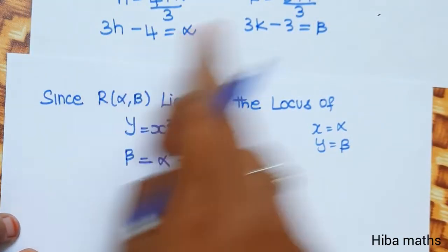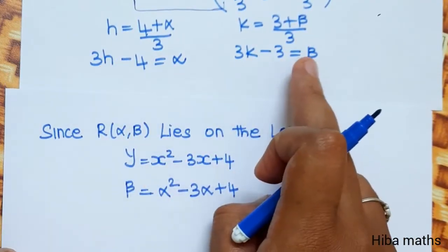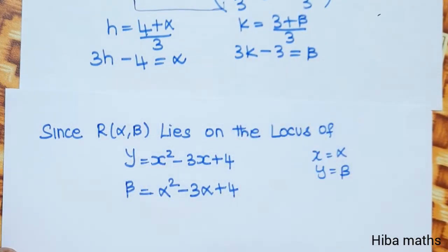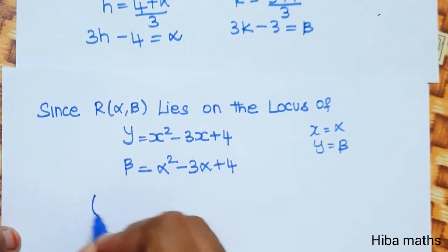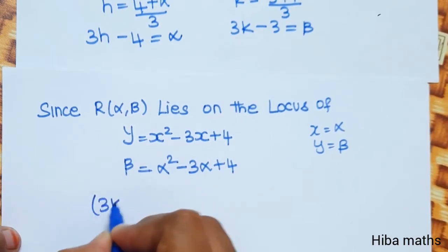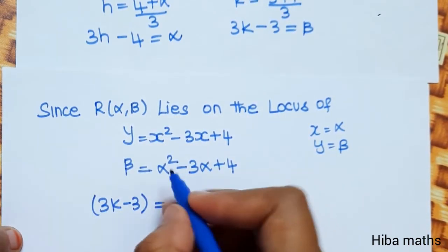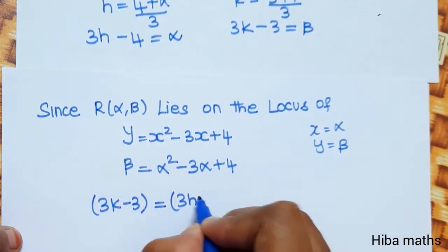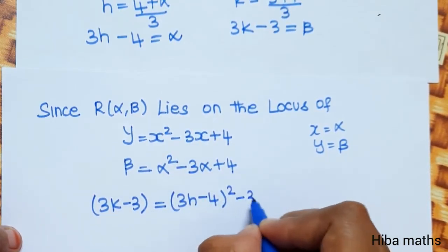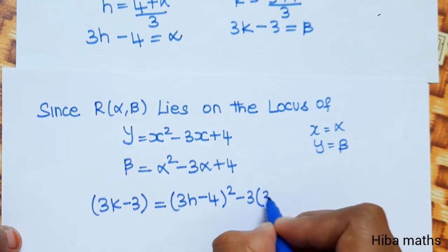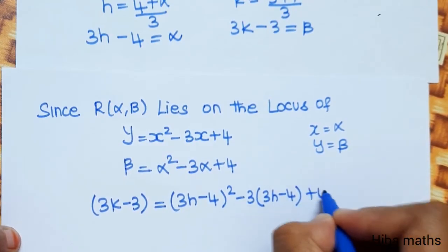Now substituting α = 3H - 4 and β = 3K - 3 into the equation: (3K - 3) = (3H - 4)² - 3(3H - 4) + 4.